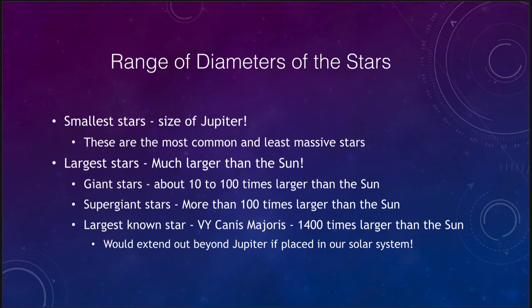What do we find when we calculate radii of stars? Well, there's a big range. The smallest stars are actually the size of Jupiter—not much bigger than Jupiter in size. Remember, they are still more massive than Jupiter but not much bigger in size. These are the most common stars that we see. Largest stars are much larger than the Sun. We have giant stars, which are defined to be between 10 and 100 times larger than the Sun. Supergiant stars are more than 100 times larger than the Sun. The very largest known star, known as VY Canis Majoris, is 1,400 times larger than our Sun. That means it would extend out beyond the planet Jupiter if we placed it at the center of our solar system. Mercury, Venus, Earth, Mars, and even Jupiter would be inside this star if it were placed at the center of our solar system. That gives us an idea of how tremendously large these stars can get.